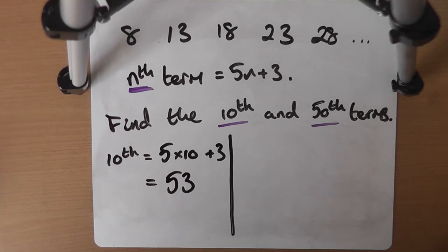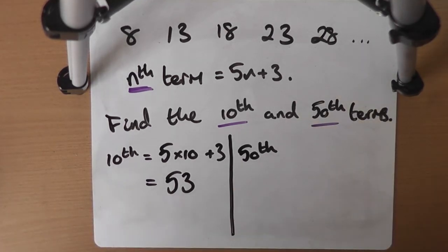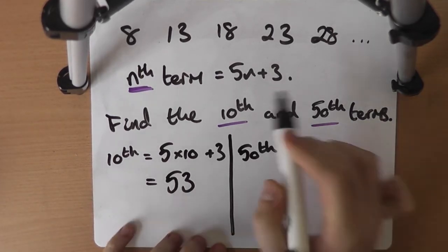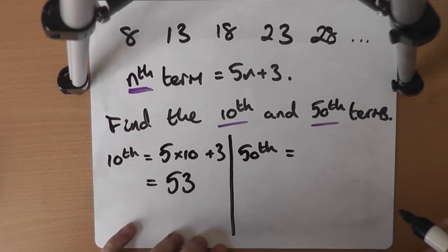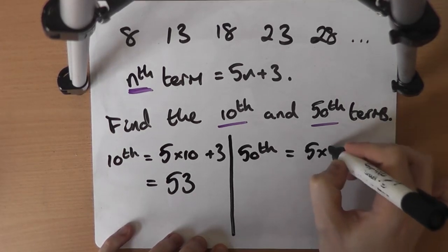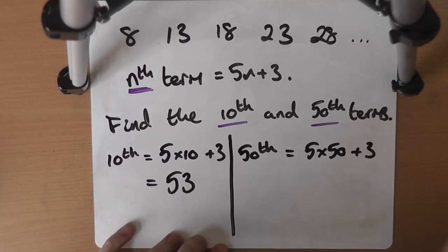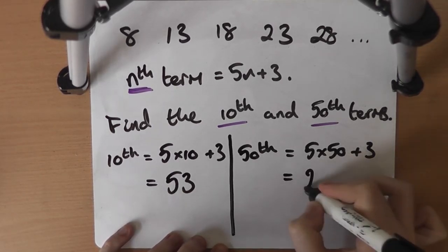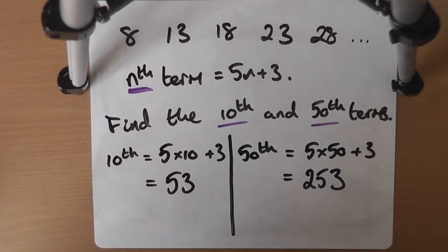If we wanted the 50th term, we do exactly the same thing — only this time we substitute in 50. The algebra rule says: take n, times it by 5, add 3. We let n equal 50. So we do 5 times 50, then add 3. 5 times 50 is 250, plus 3 gives us 253. The 50th term in that sequence is 253.